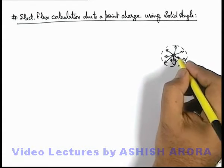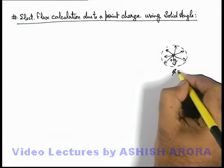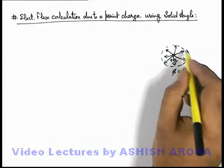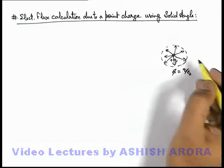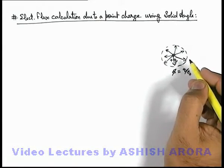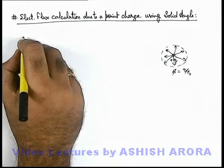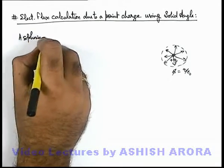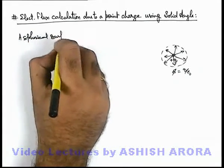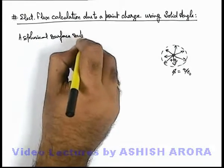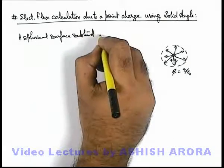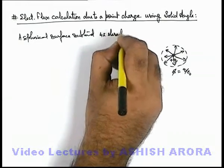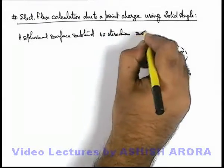We can say that the flux which is originated is q by epsilon not, and if we talk about the solid angle in which it is distributed, that will be totally 4π steradians, because we know that a spherical surface subtends 4π steradians of solid angle.